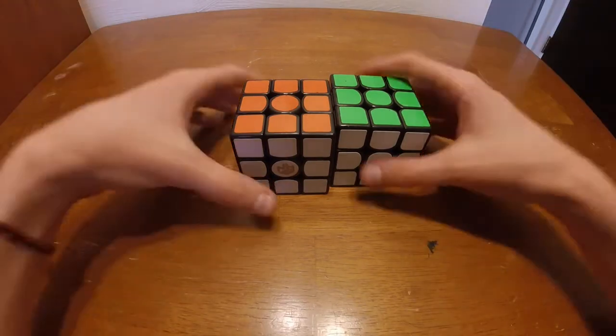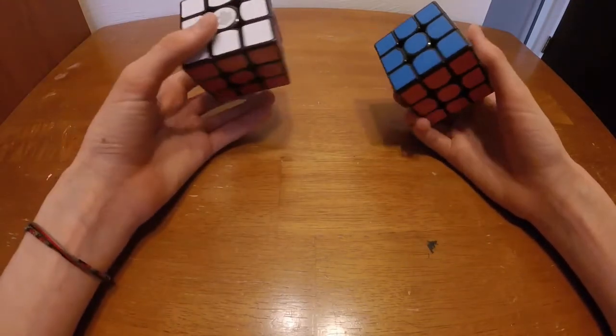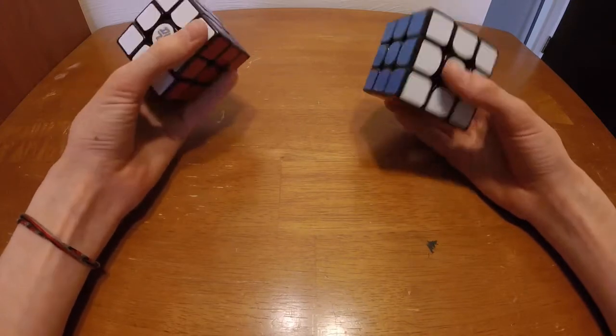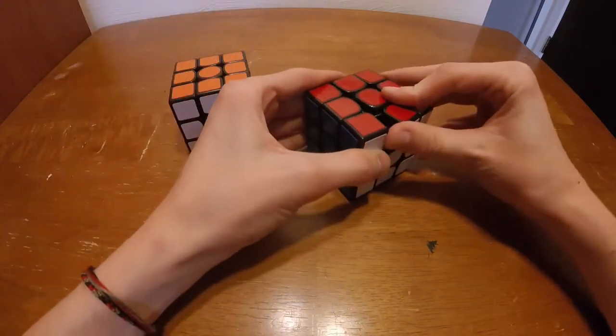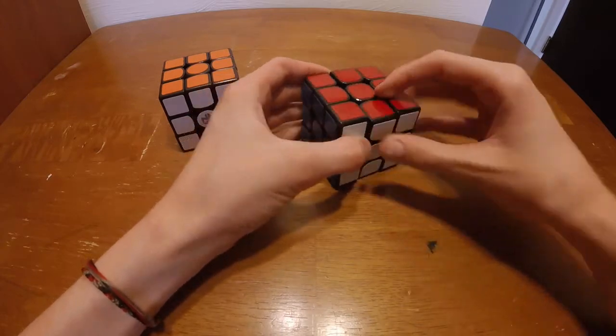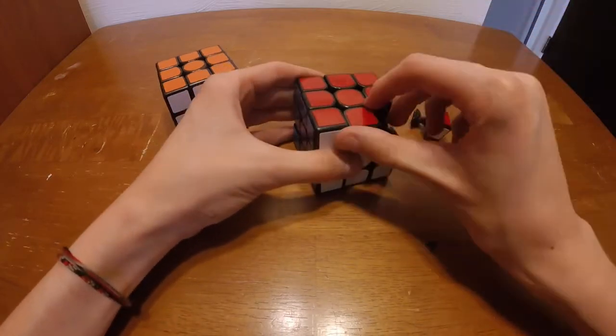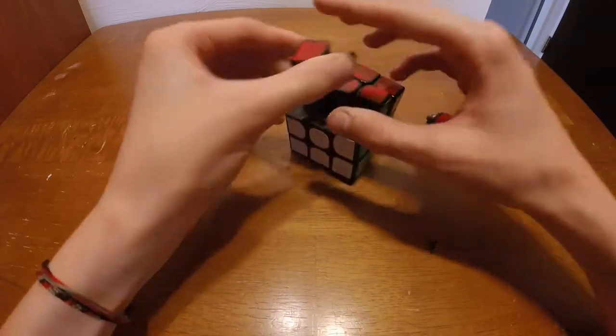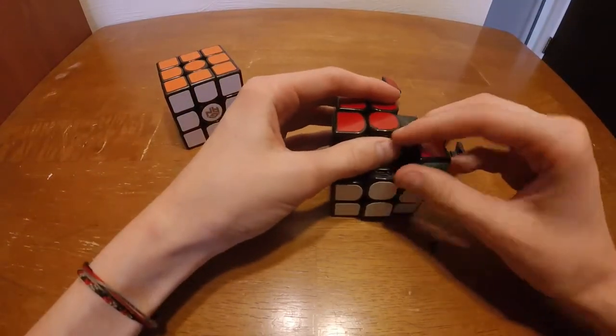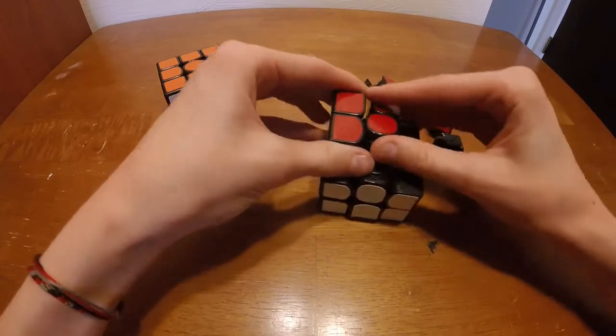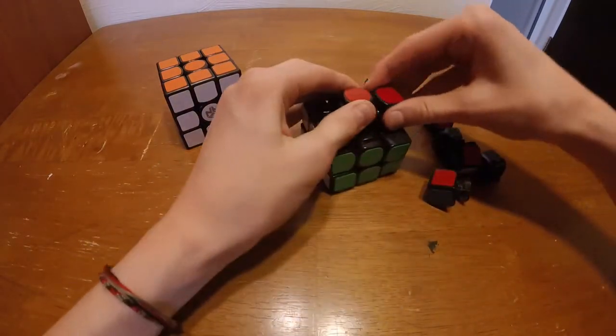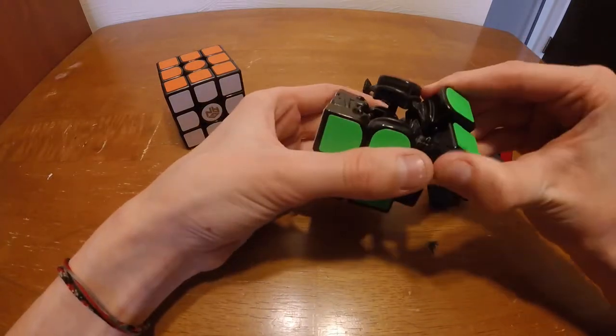Alright, so first what you want to do is you want to take either of your cubes. Both of these cubes need to be lubed, and you want to disassemble it. So you can pop out a corner, pop out an edge first, whatever, or even unscrew it if you have to. Just take it apart until you only have the core, and then we'll move on to the next step.